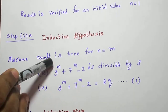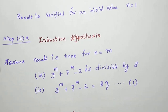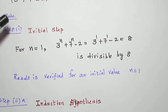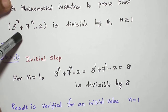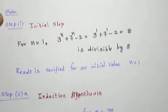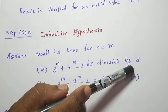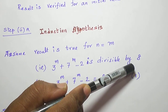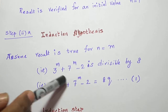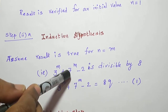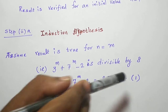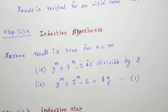Now, let us assume that the result is true for n is equal to m. In the place of n, I put m in the expression. So I will get 3 power m plus 7 power m minus 2 is divisible by 8. That is the assumption we are making. If we write the assumption as a mathematical equation, 3 power m plus 7 power m minus 2 has a factor 8, so that can be written as 8 into q — that is taken as equation 1.